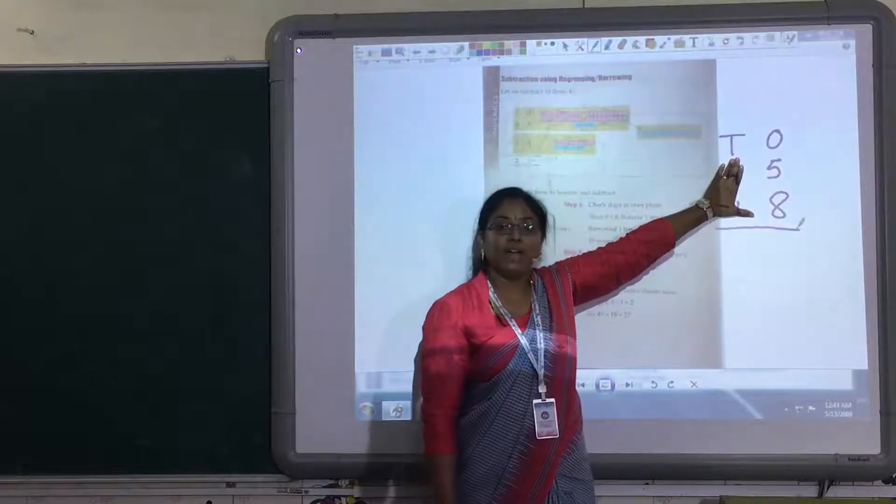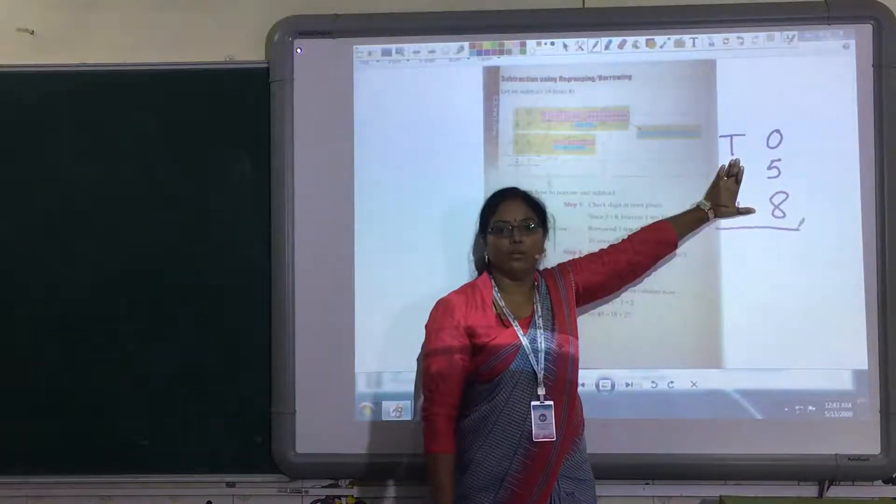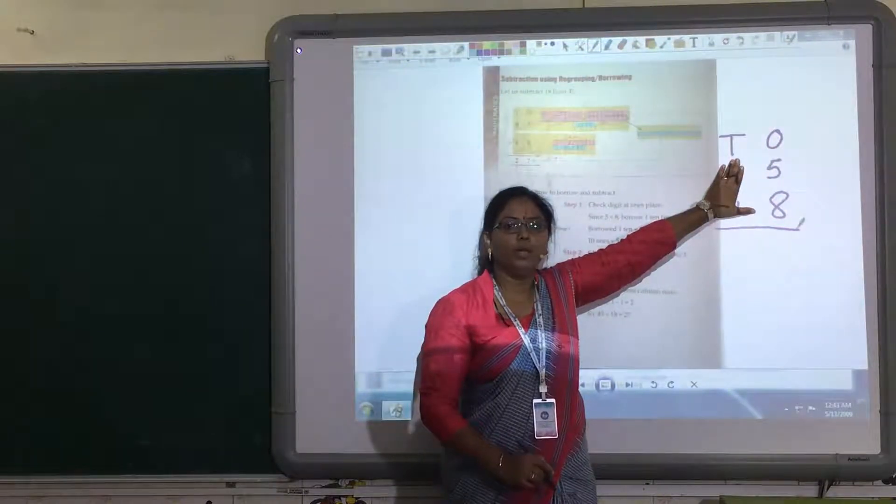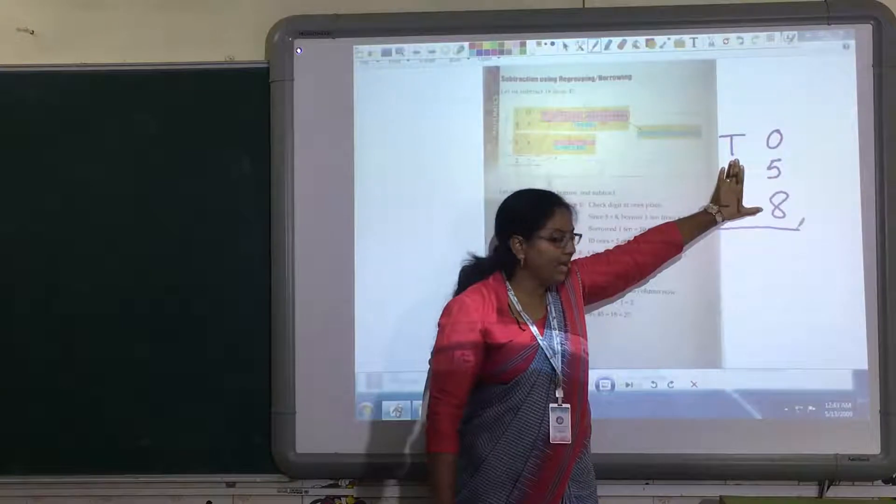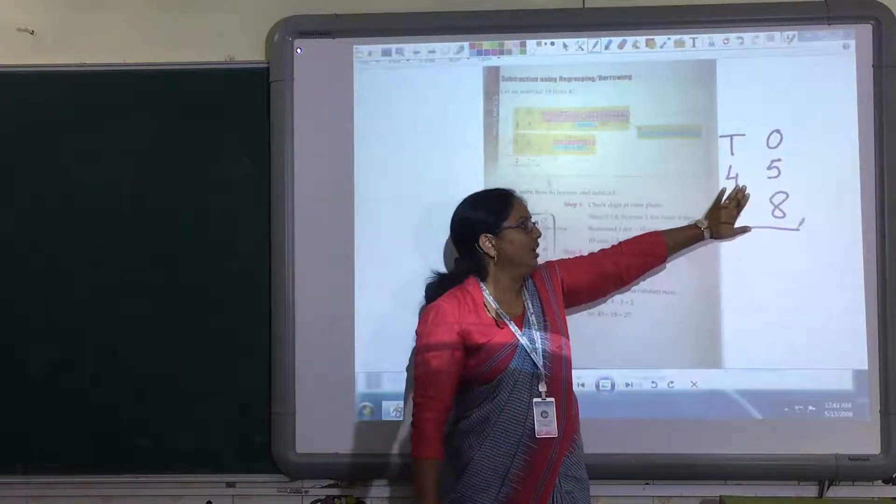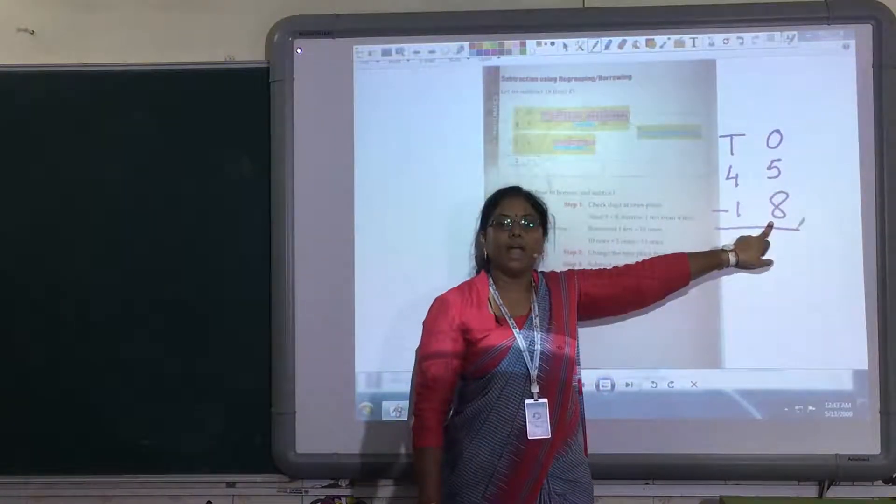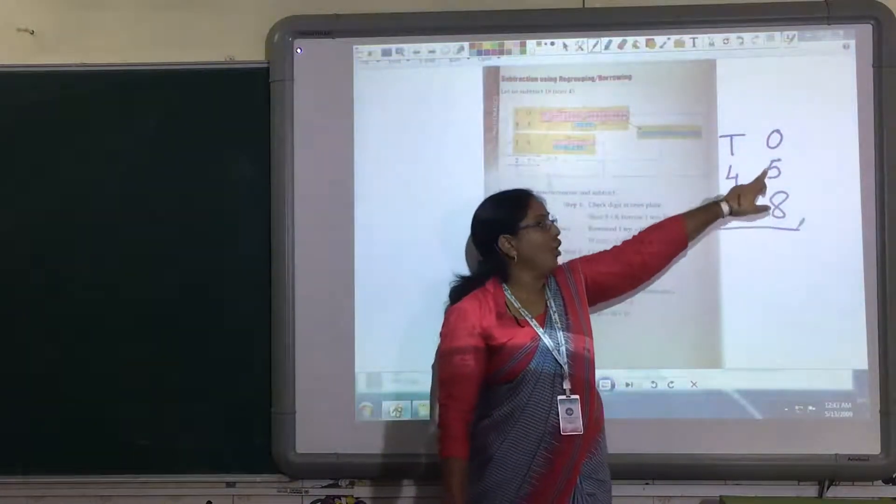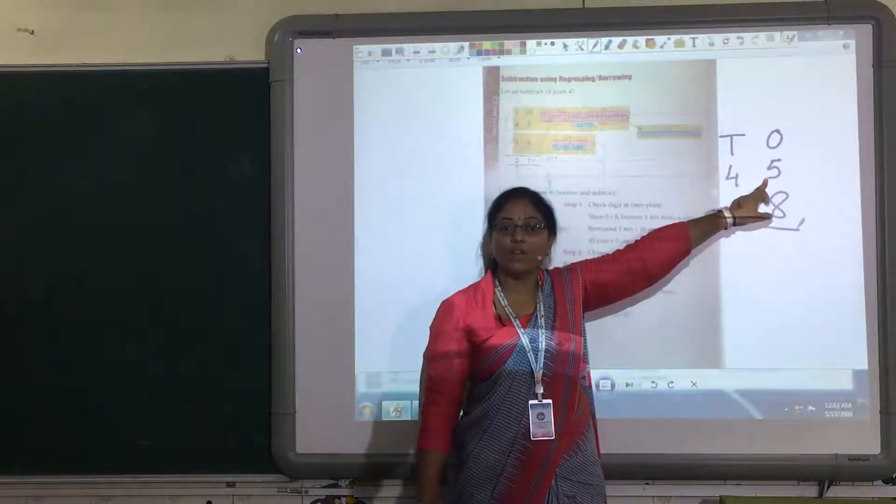Now, children, see, 5 is a smaller number and 8 is a bigger number. From smaller number, we cannot minus bigger number. But, from bigger number, we can minus smaller number. But, here it is given smaller number as 5 and bigger number as 8. Now, 8 cannot be minus from the 5.